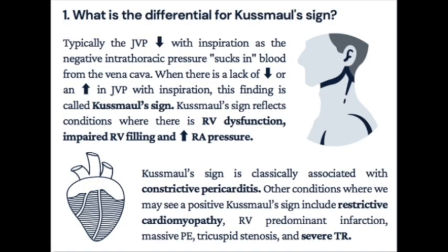Myocarditis is inflammation of the heart muscle, most common in young adults. Pathophysiology: myocellular damage leads to myocardial necrosis and dysfunction, leading to heart failure. Etiologies: infectious is most common — viral being most common, especially enteroviruses like Coxsackie B virus; bacterial can also cause it. Autoimmune causes include SLE and rheumatoid arthritis.